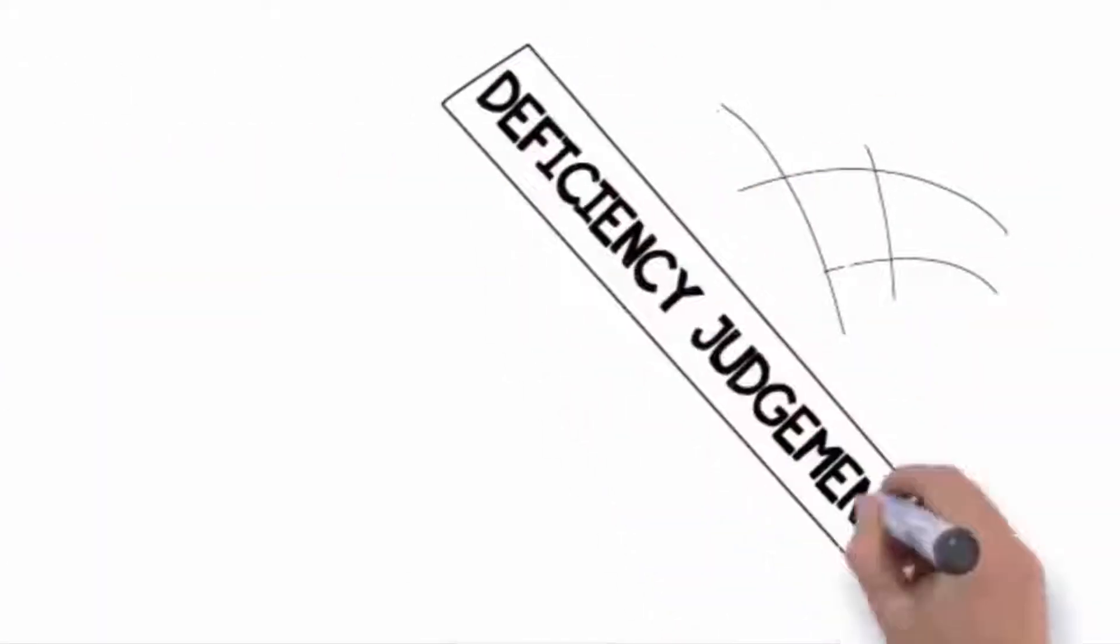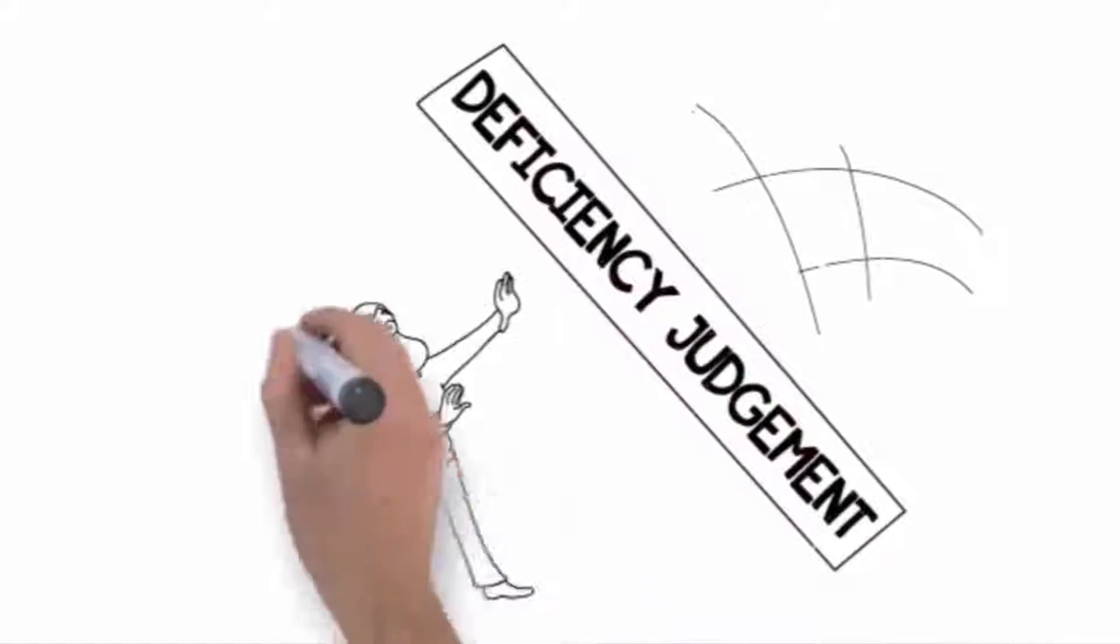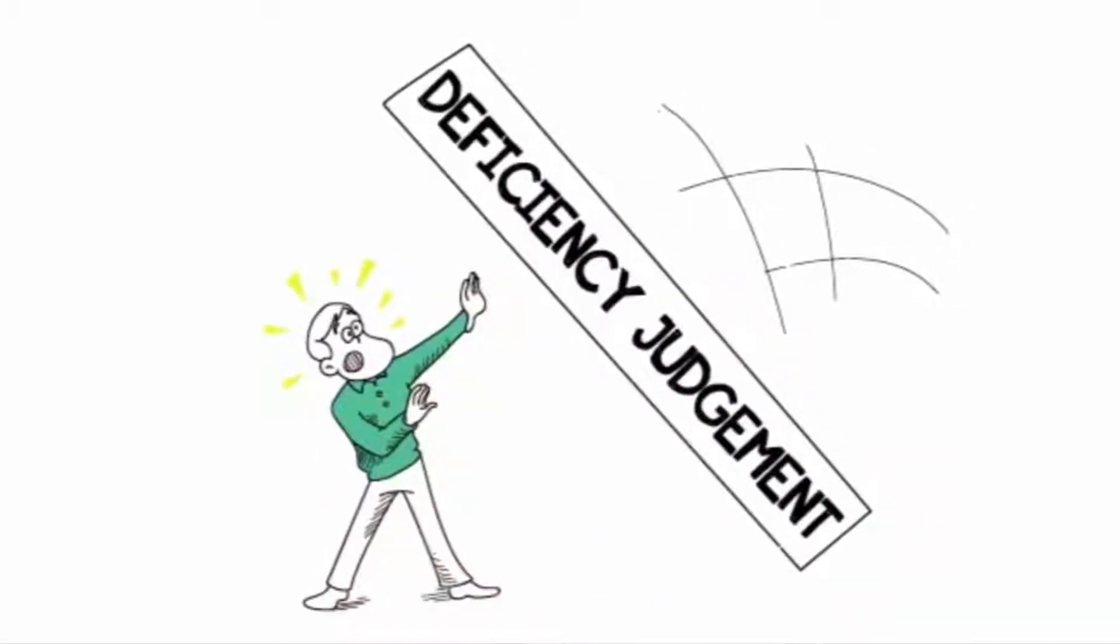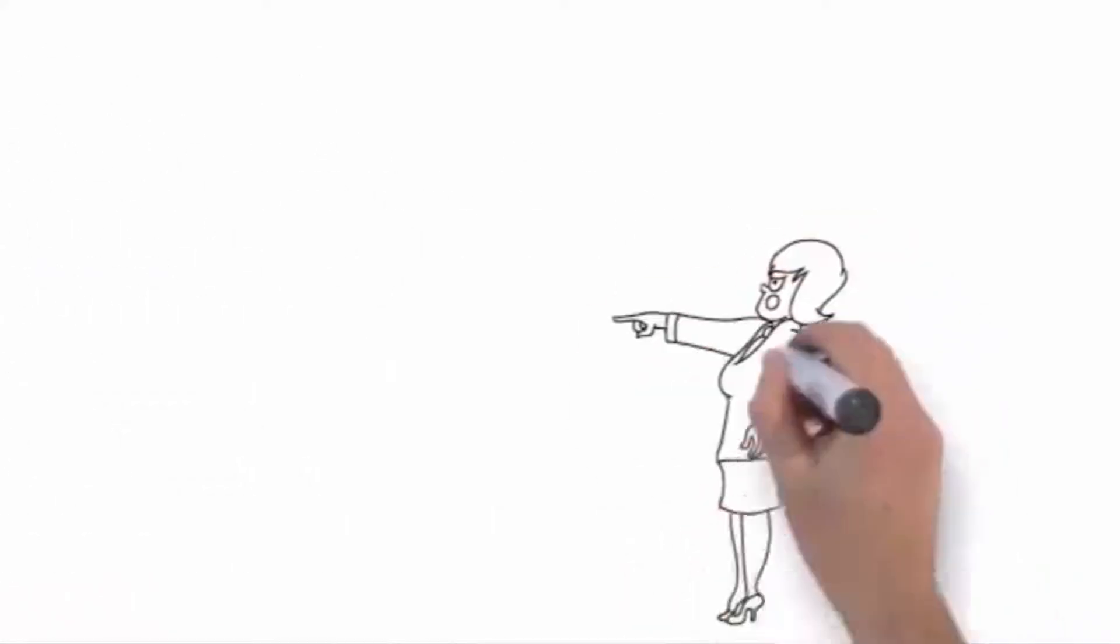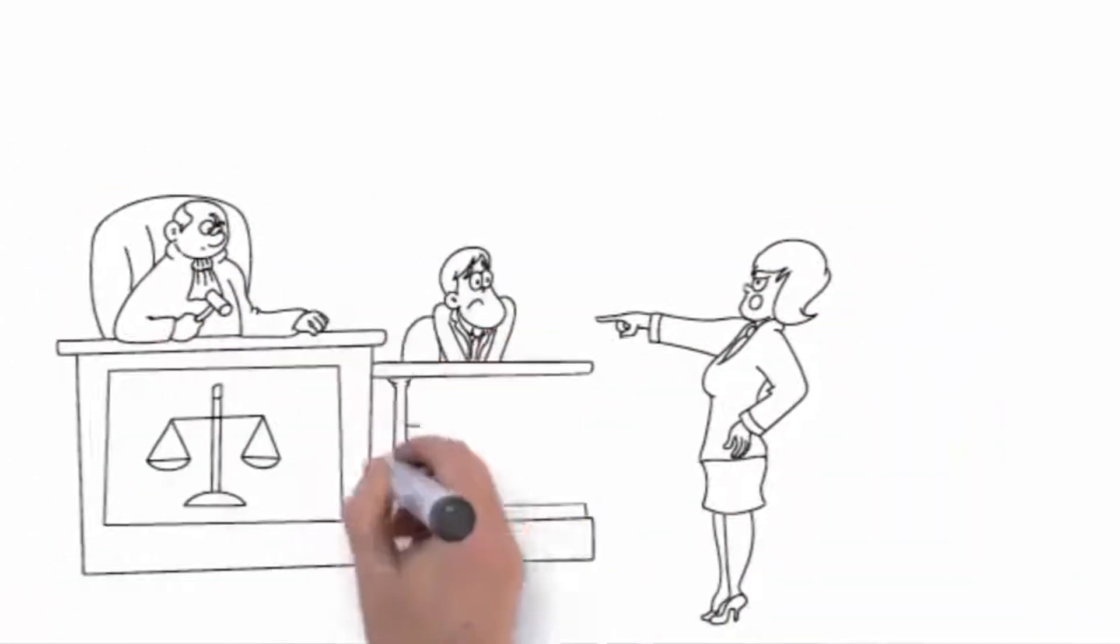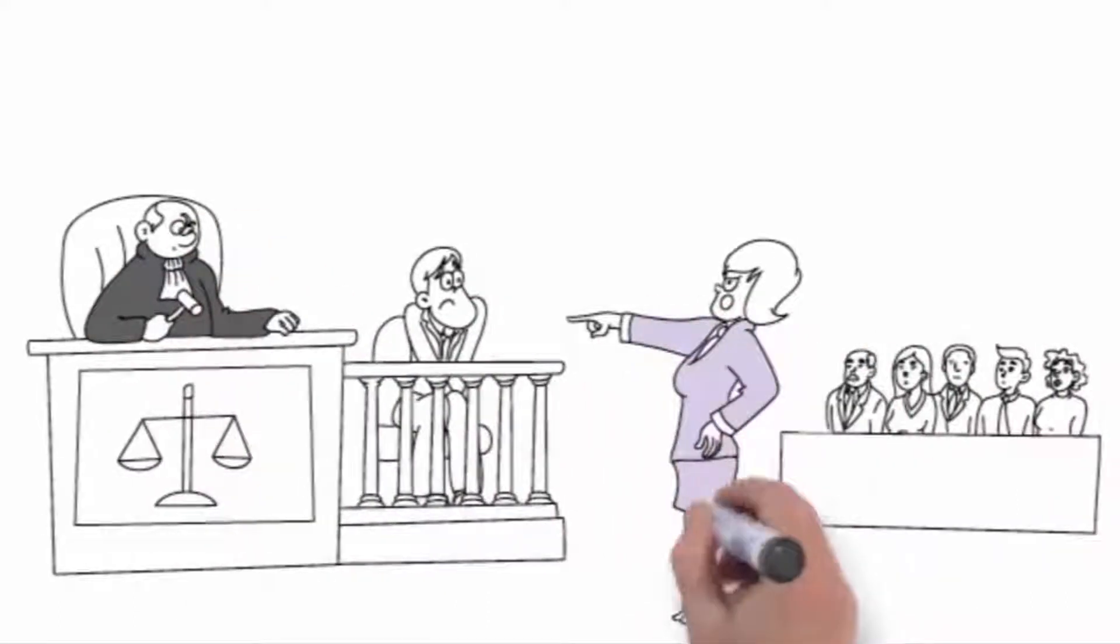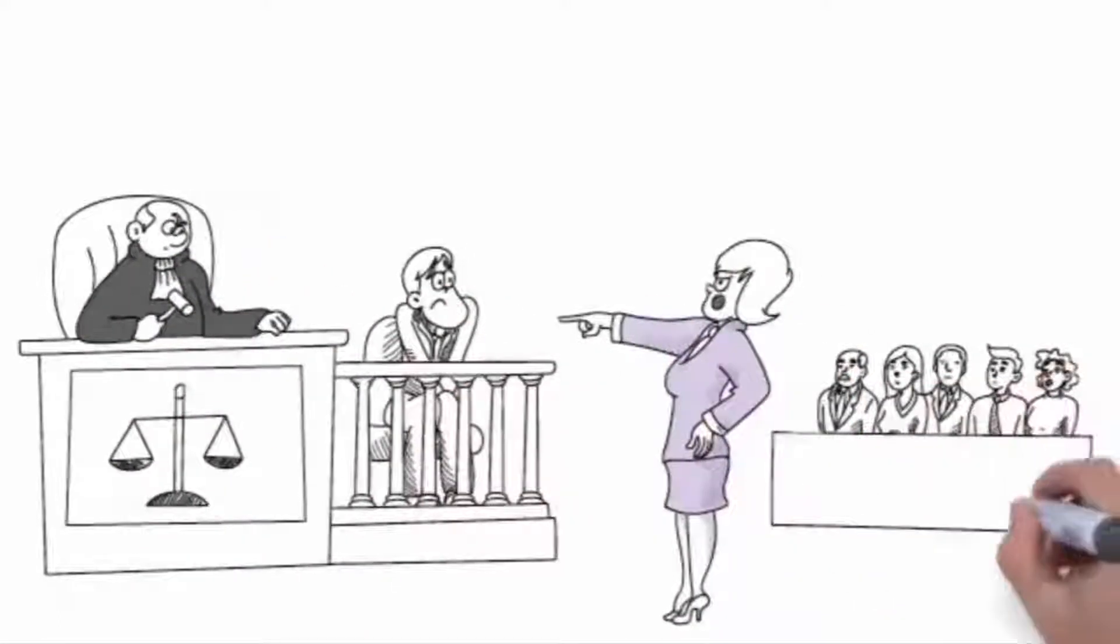And remember the term deficiency judgment that I mentioned earlier? Did you know that you can be forced to pay back your lender for losses they experience when they foreclose on your house? They have the legal right to file a judgment against you and can collect those losses. When you short sale your house, you have the opportunity to negotiate or even eliminate deficiencies.